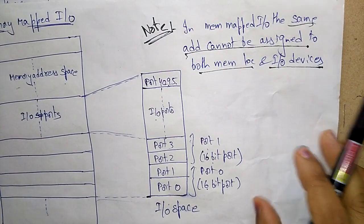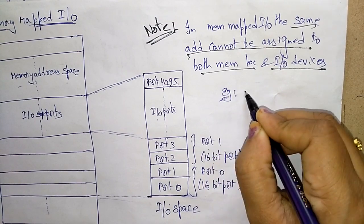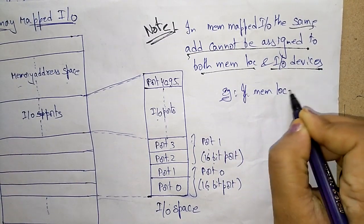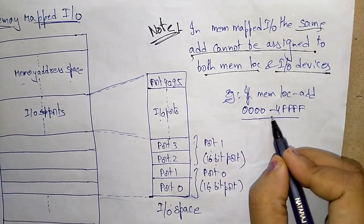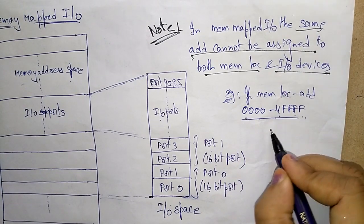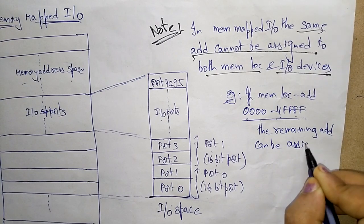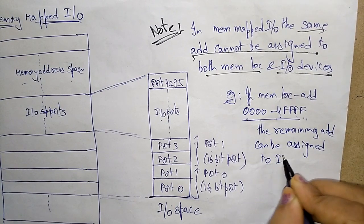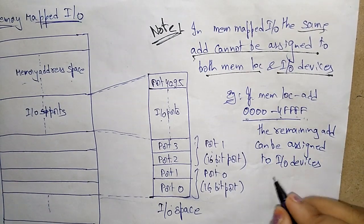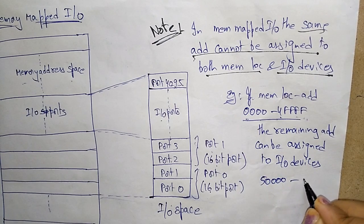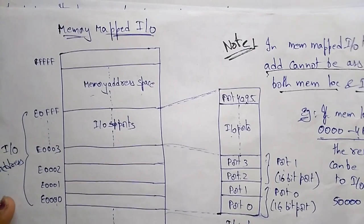For example, suppose the memory location addresses start from 0x000000 to 0x4FFFFF. So memory is using these addresses from 0x000000 to 0x4FFFFF. The remaining addresses — from 0x500000 to 0xFFFFFF — can be assigned to I/O devices. So the I/O devices are mapped to that remaining address range.